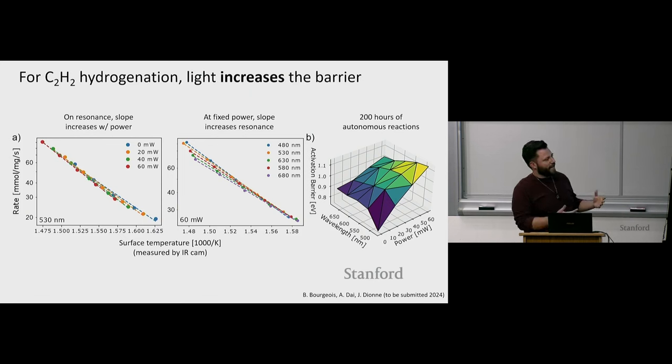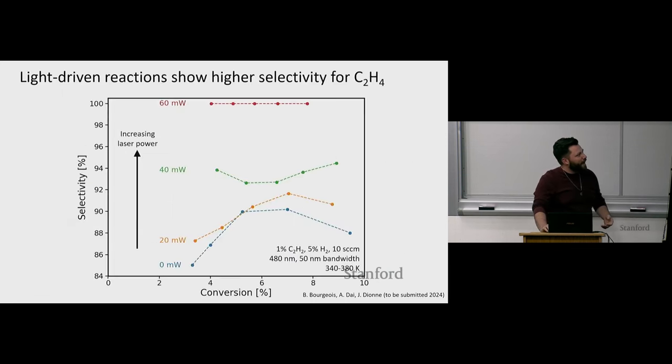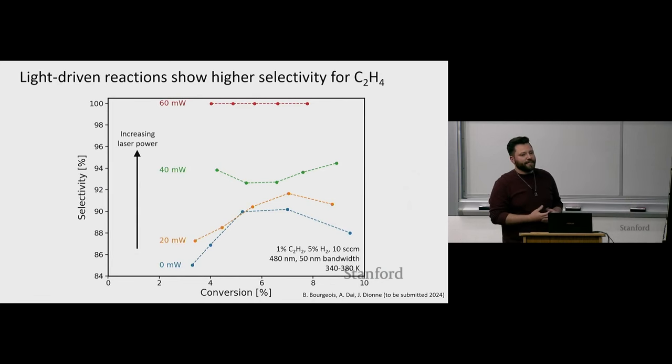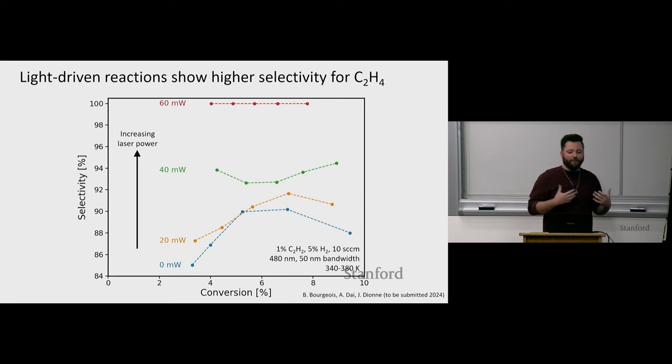This is a subset of the data that we generate. We're doing this measurement called the activation barrier measurement. We're trying to look at how sensitive is our chemistry to heat. We set some wavelengths. Here we're on our plasmon resonance. We vary our laser power. We change the temperature of our catalyst, and we look at how much does it respond. We find that the more power we put in, the less sensitive it becomes to heating. We do different wavelengths. We find that on resonance, as we go towards this 530, 480 nanometer wavelength, we increase the barrier even further. We build up these maps of what is the barrier for this reaction under different optical conditions.